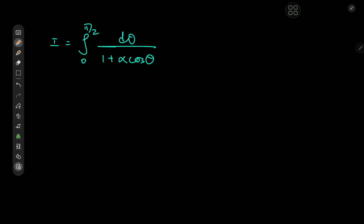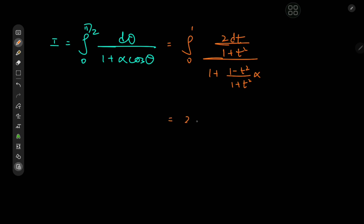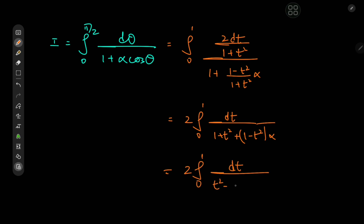All of our hard work has yielded this interesting transformation of the integral. We have the integral from 0 to 1 of 2dt/(1+t²) divided by 1 + α·(1−t²)/(1+t²). Expanding by multiplying through by (1+t²), we get 2 times the integral from 0 to 1 of dt divided by (1+t²) + α(1−t²). Expanding and collecting like terms, we factor out t²(1−α), leaving 1+α in the constant term.